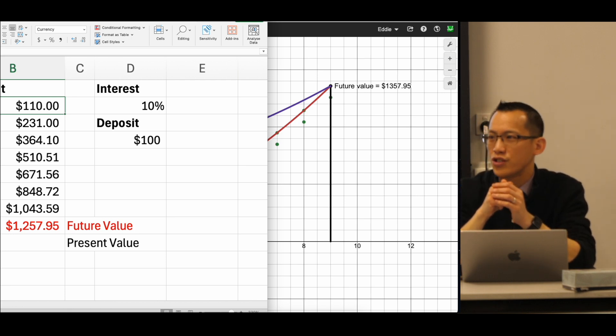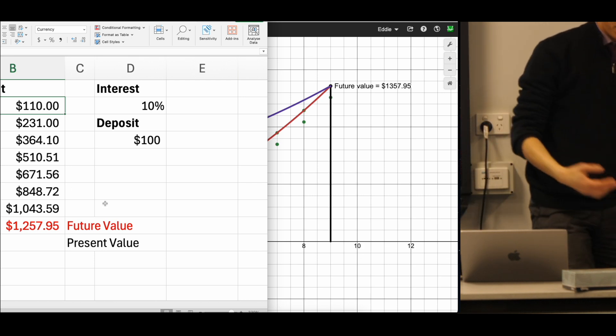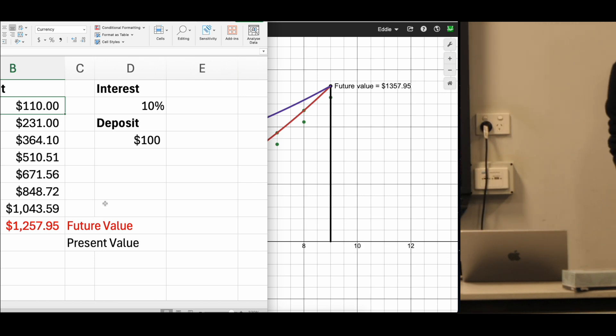How might you change this spreadsheet so that instead of calculating future value, it will calculate present value. I'm going to let you see if you can work it out. I'll give you a bit of time, and if you are really struggling, call me over. Off you go.